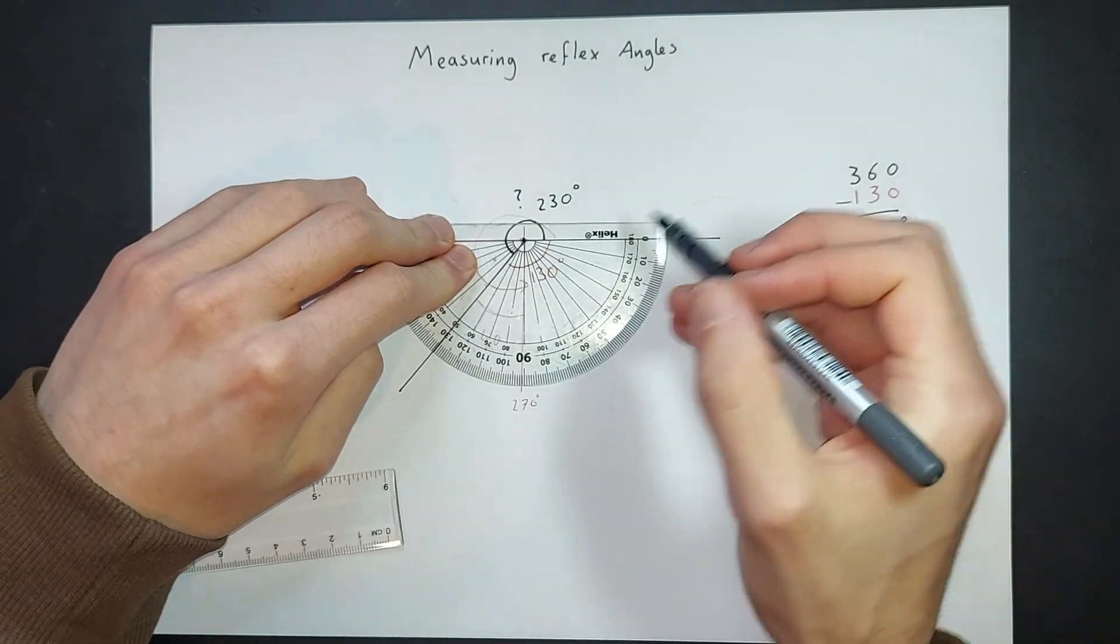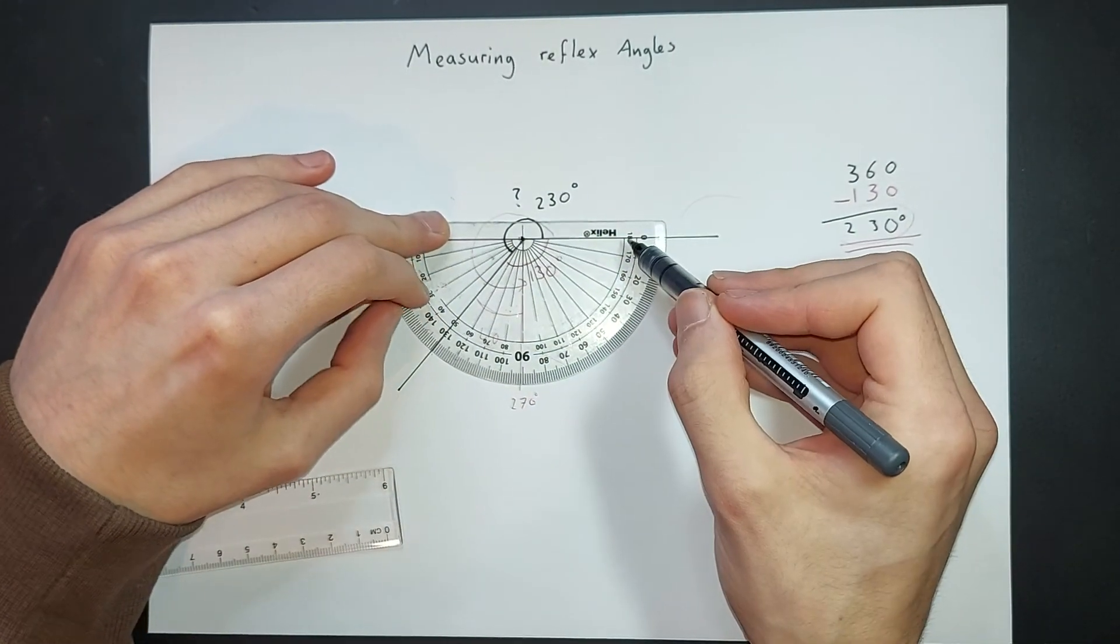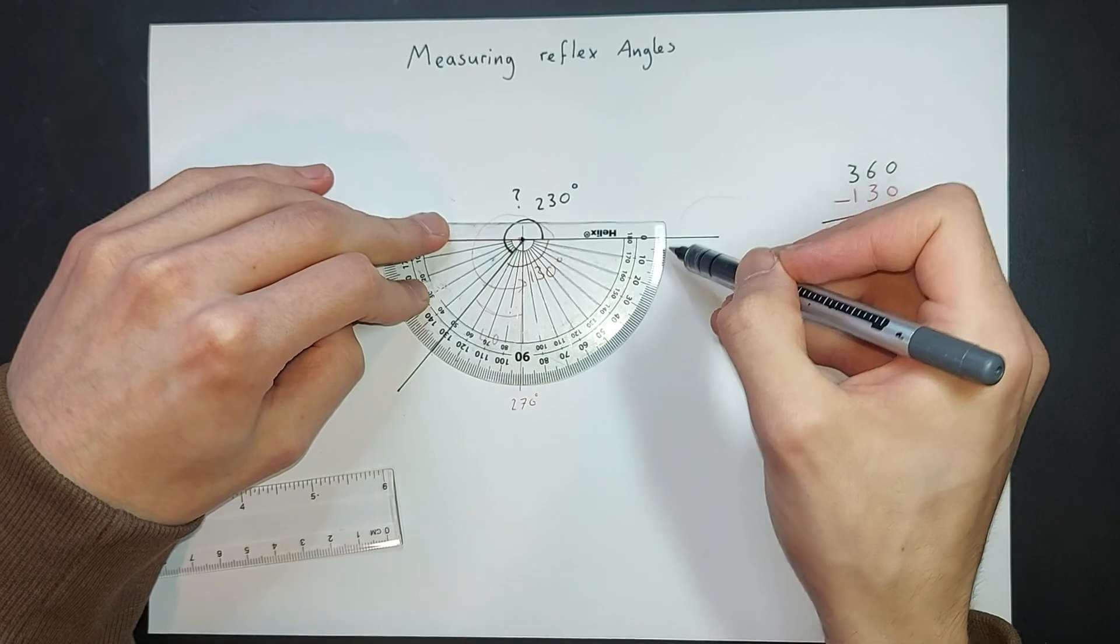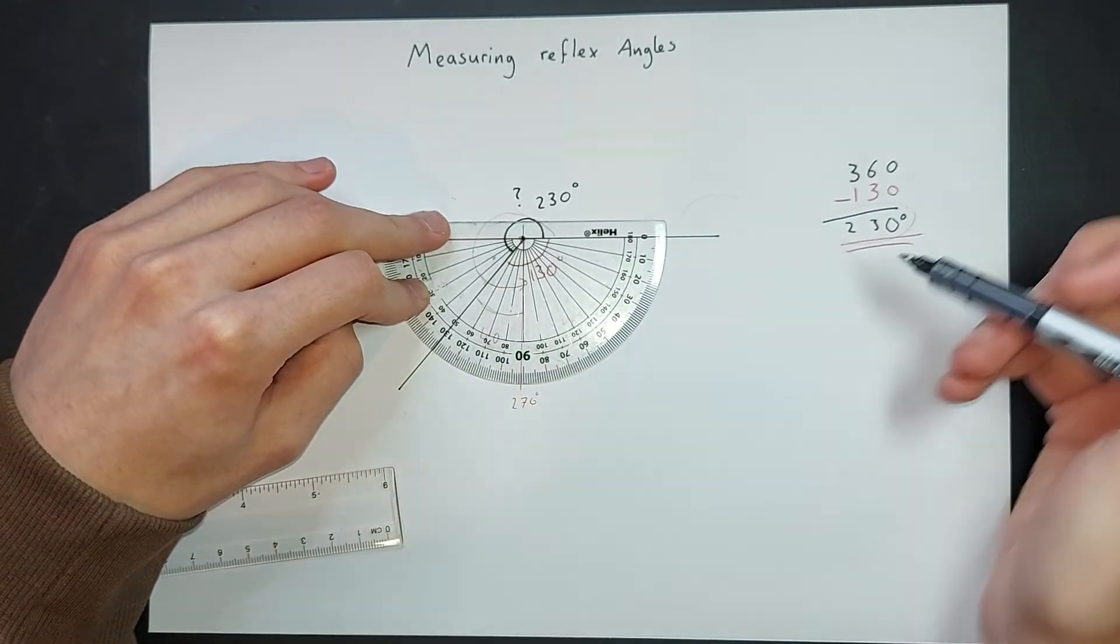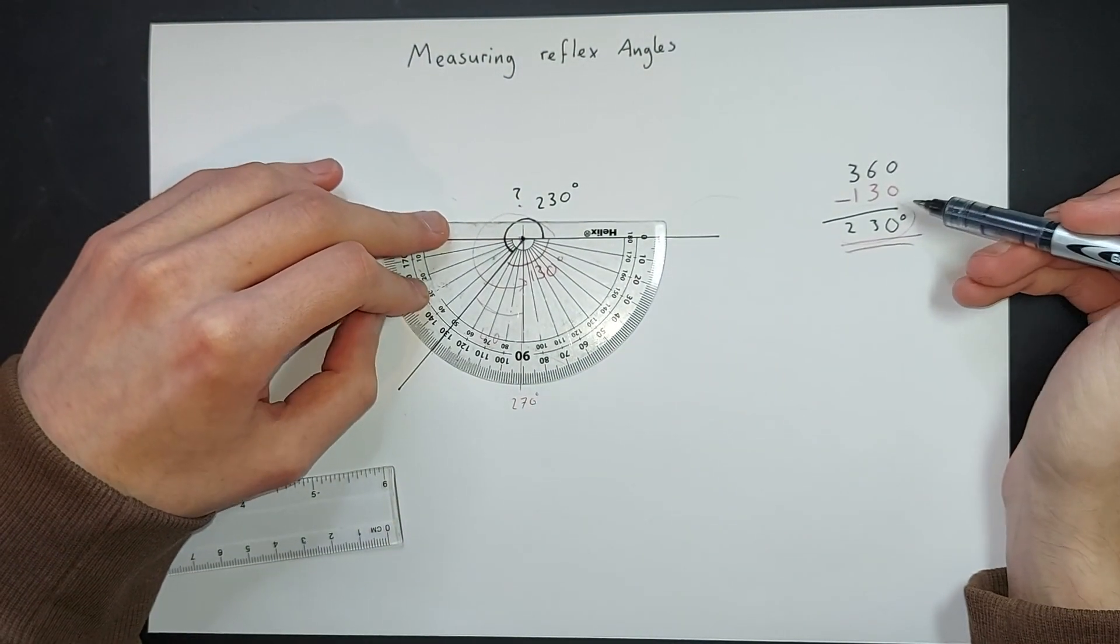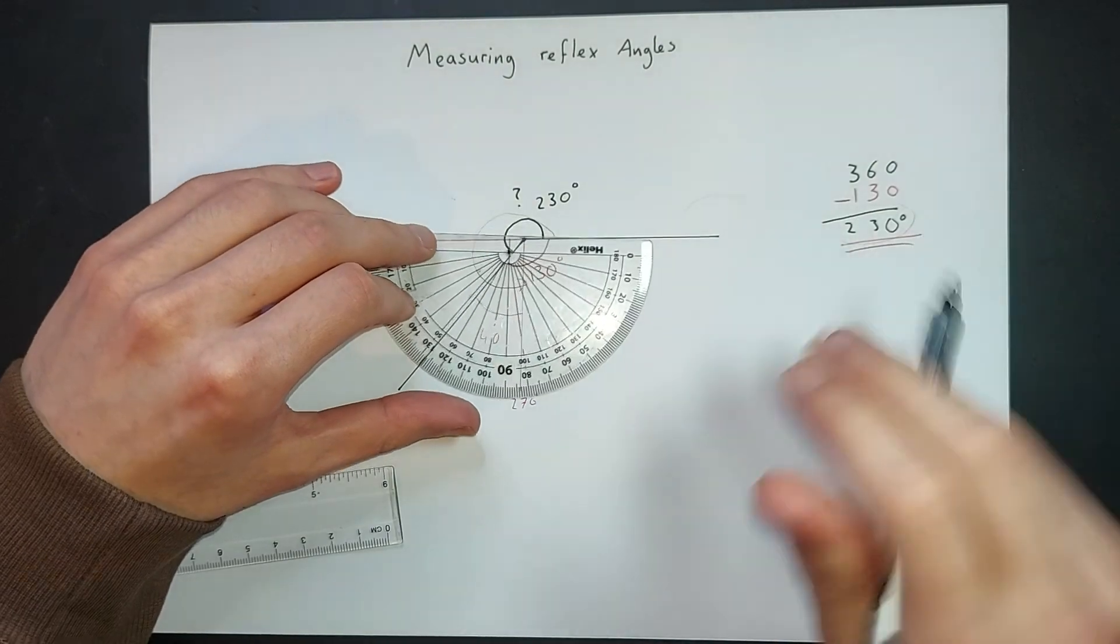And then I thought, well, if I went 360 degrees all the way around, I've gone how much too far? Well, I've gone 130 degrees too far. So I did 360, take away that 130, to get an answer of 230 degrees.